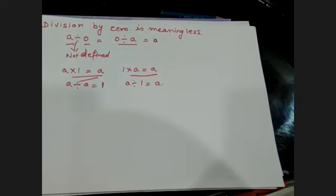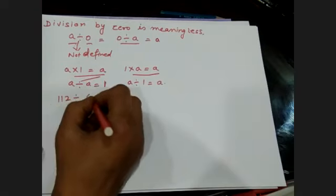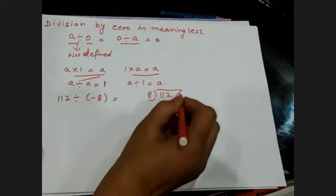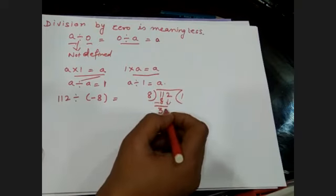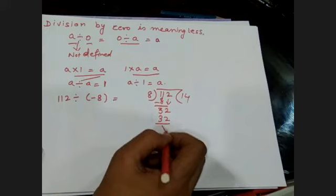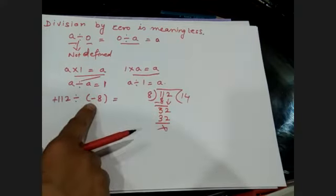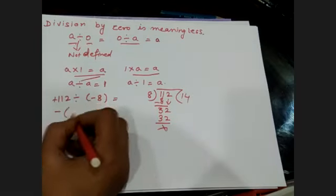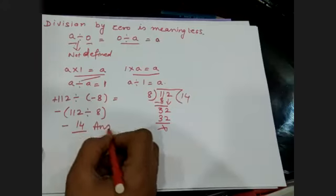Now I will take one example: 112 divided by minus 8. You divide 112 by 8 — 8 ones are 8, and continuing the long division gives 14. Here the dividend is positive and the divisor is negative, so you take the minus sign outside and 112 divided by 8 equals 14, giving the answer minus 14.